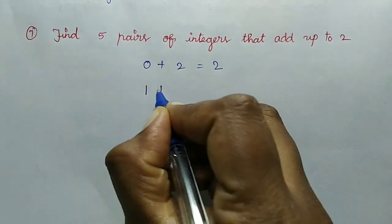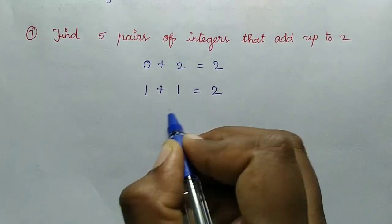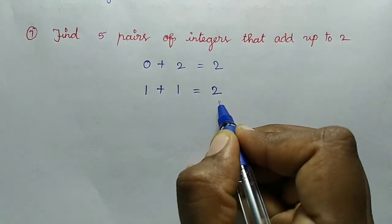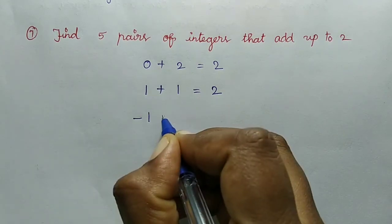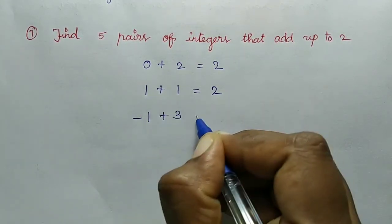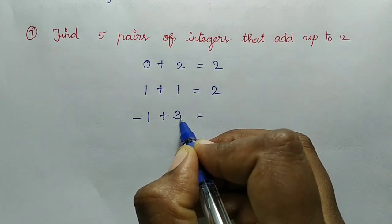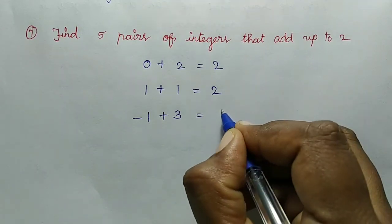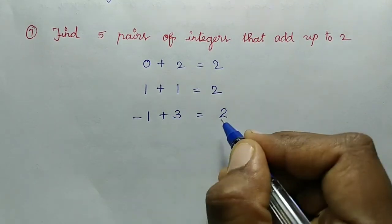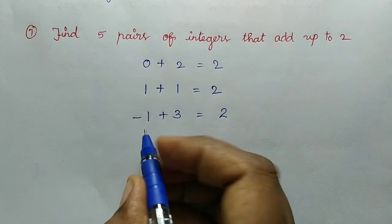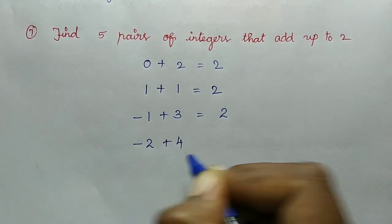Next: 1 plus 1 equals 2, so 1 and 1 add up to 2. Then next value: minus 1 plus 3 — here we have one negative and one positive value. The greater value is positive, so minus 1 plus 3 equals 2. Next: minus 2 plus 4, the greater value is positive, so minus 2 plus 4 equals 2.